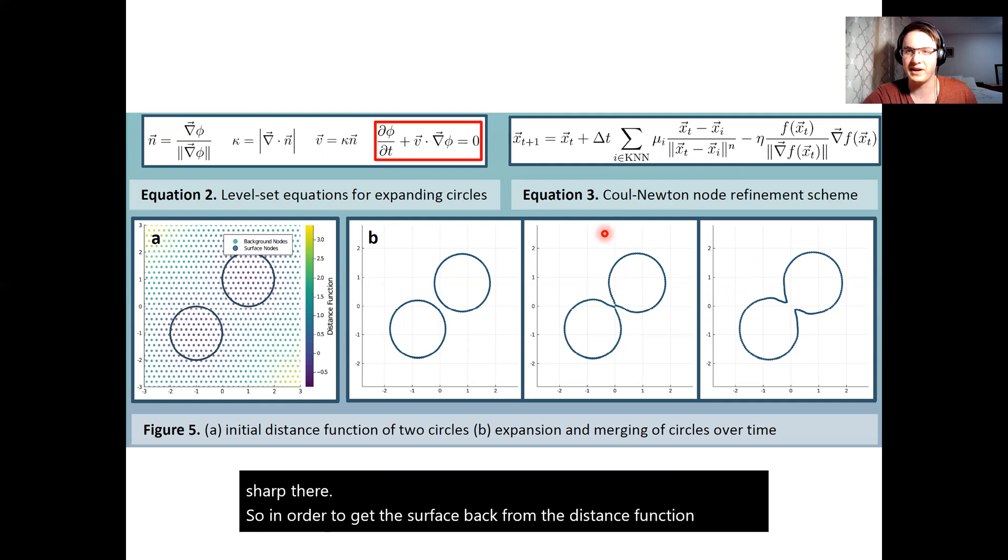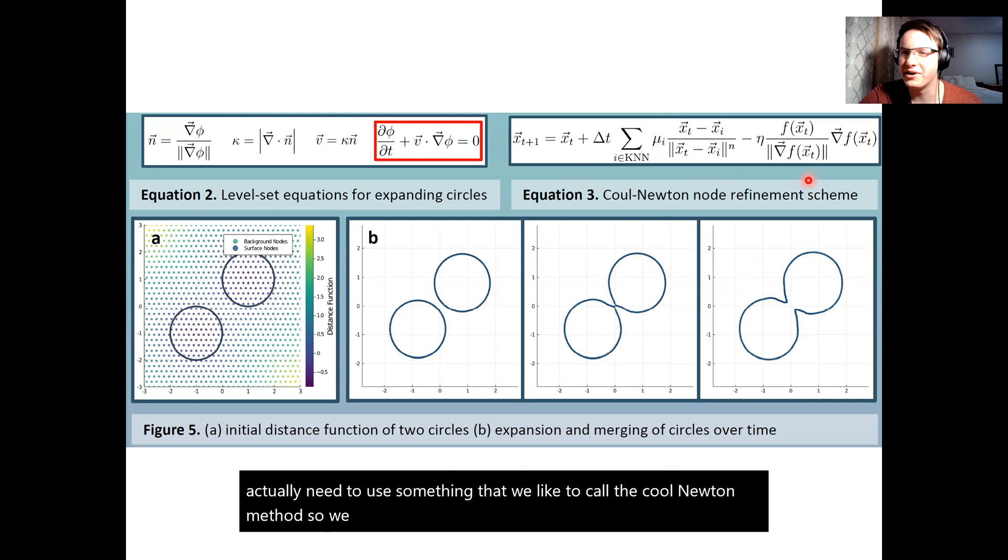So in order to get the surface back from the distance function, we actually need to use something that we like to call the cool Newton method. So we developed that and that's given up here. You essentially just apply this equation a few times to your data set and it puts all the points onto your surface given a distance function. And it works really well, it's able to expand points and whatnot.